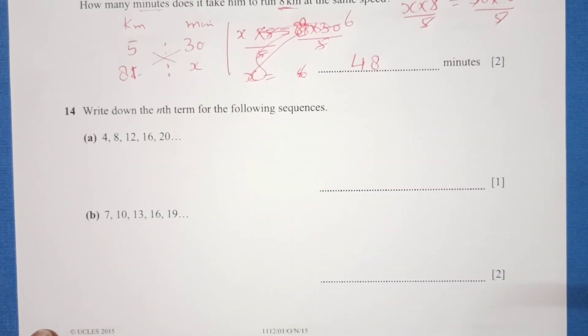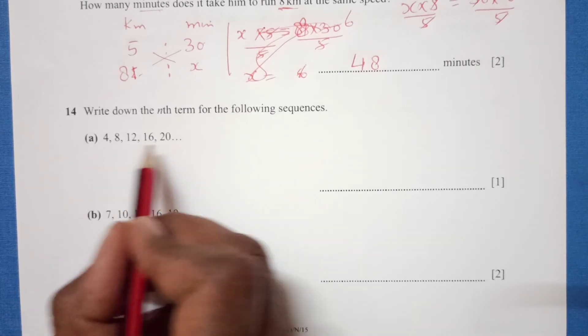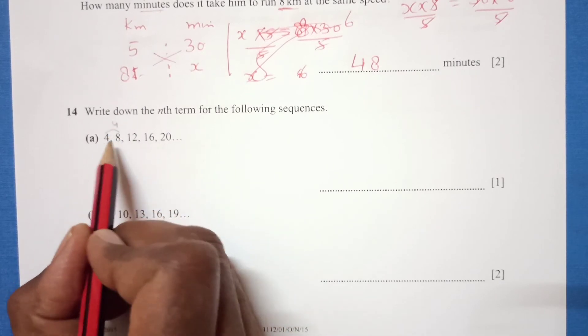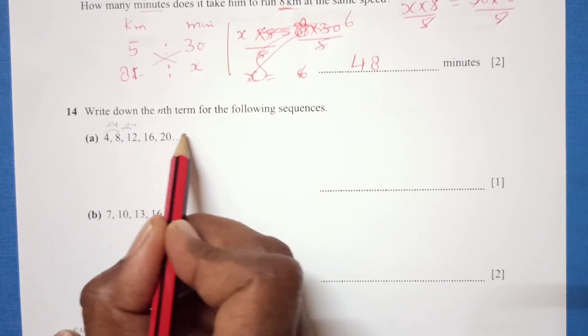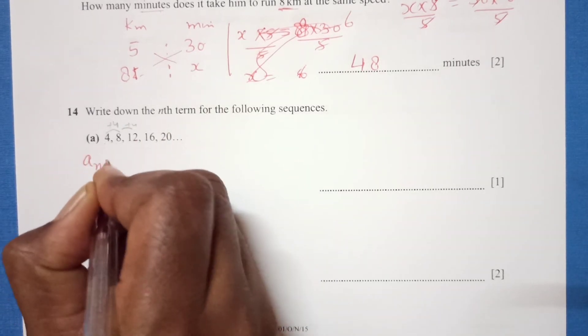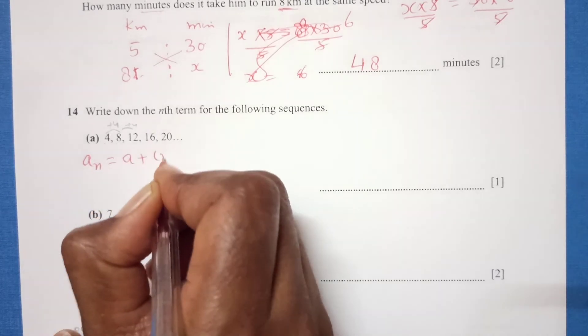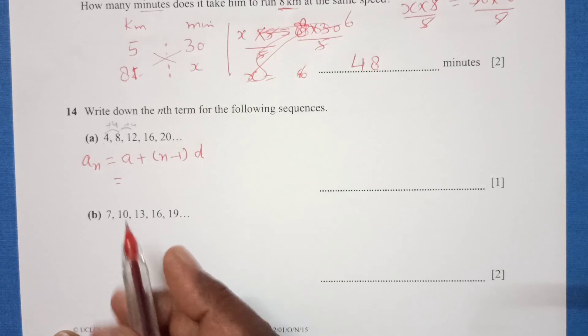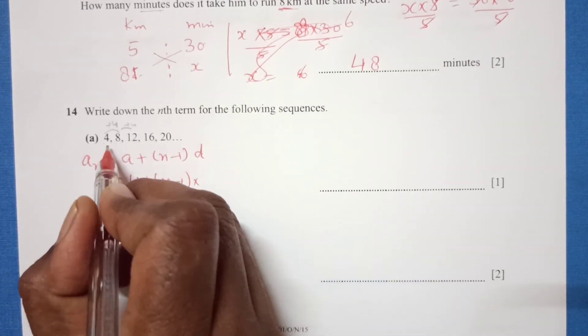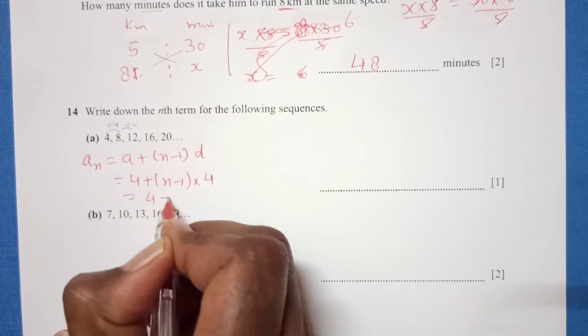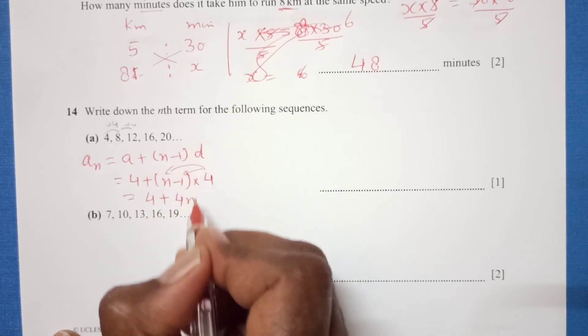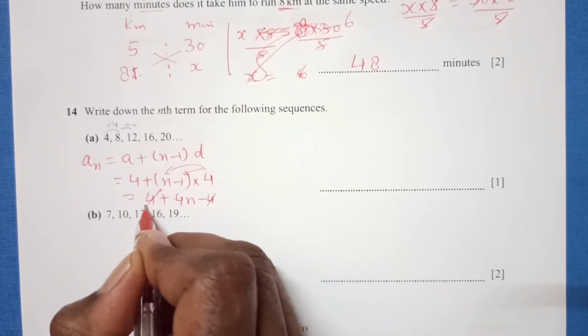Write down the nth term of the following sequence. First we see the difference is 4 plus 4 plus 4. We can directly use the formula: a plus n minus 1 into d. A is the first term, which is 4, n minus 1, d common difference is 4. So 4 plus 4n minus 4. This and this is cancelled, so we are left with only 4n.